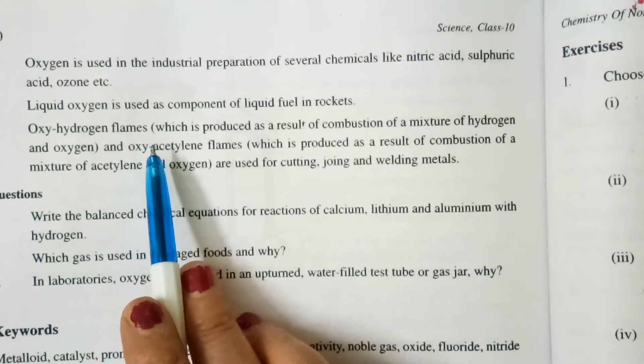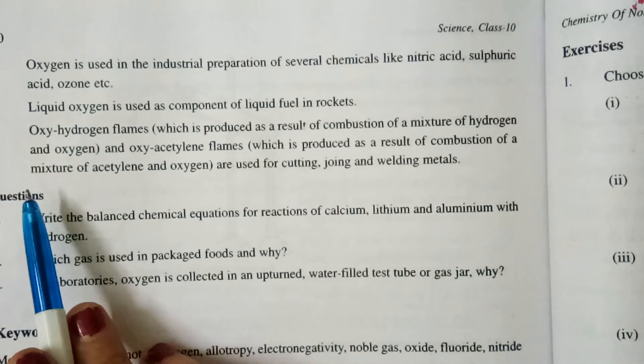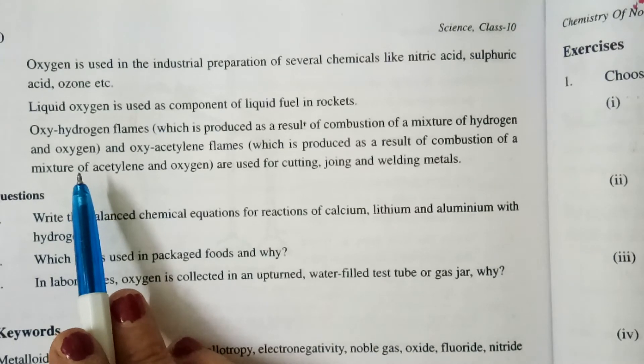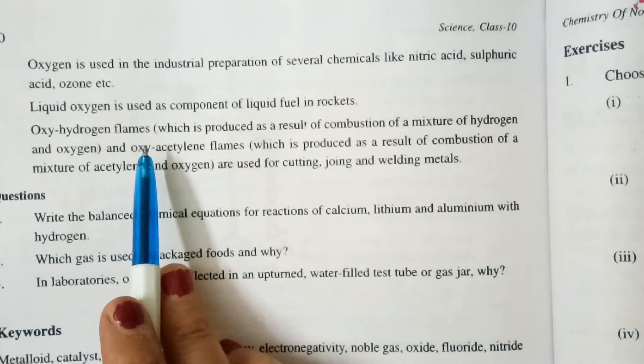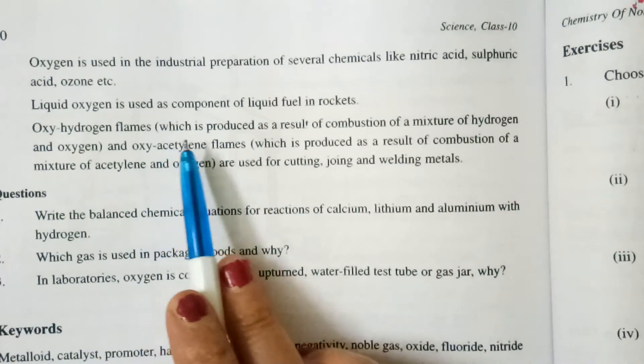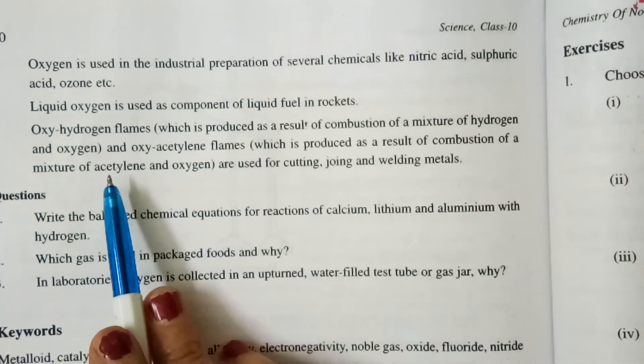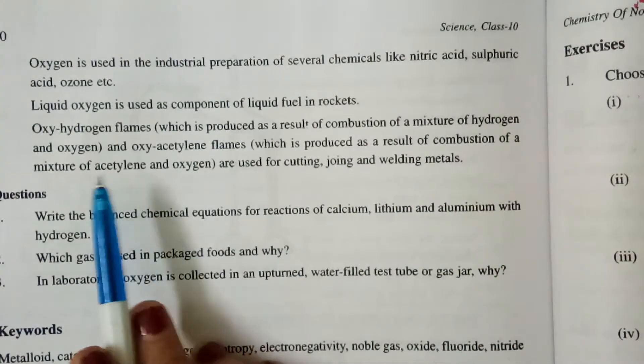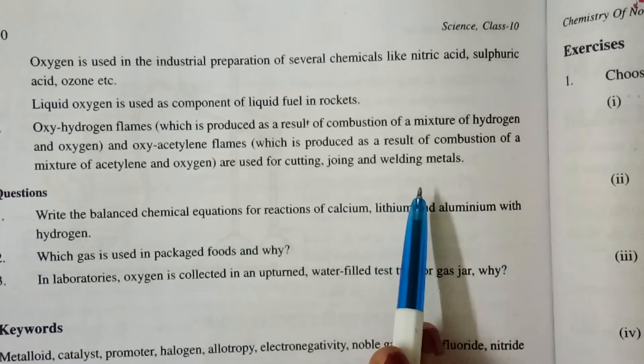Oxyhydrogen flames, which is produced as a result of combustion of mixture of hydrogen and oxygen. When hydrogen and oxygen gases are mixed. Oxyhydrogen flames, this is produced by the combustion of the mixture of hydrogen and oxygen and oxyacetylene flames which is produced as a result of combustion of a mixture of acetylene and oxygen are used for cutting, joining and welding metals.